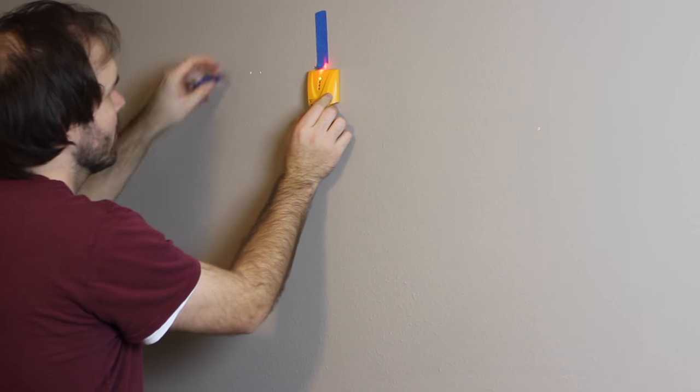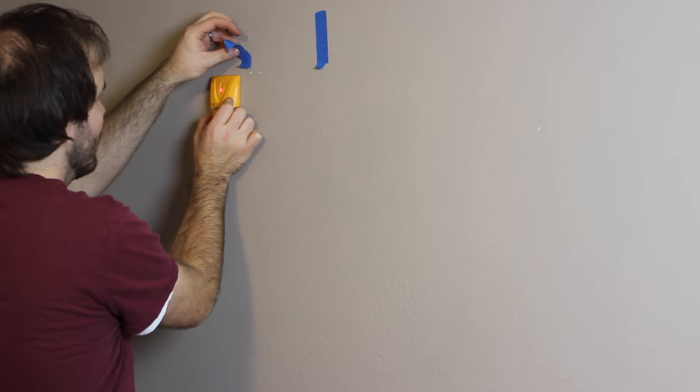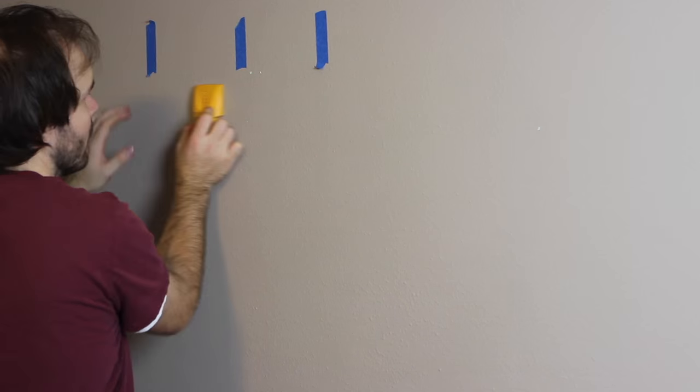Before mounting the TV to the wall, locate the studs and anchor the mount to at least two of the studs with two and a half inch screws. Use the level to ensure that the mount is straight.